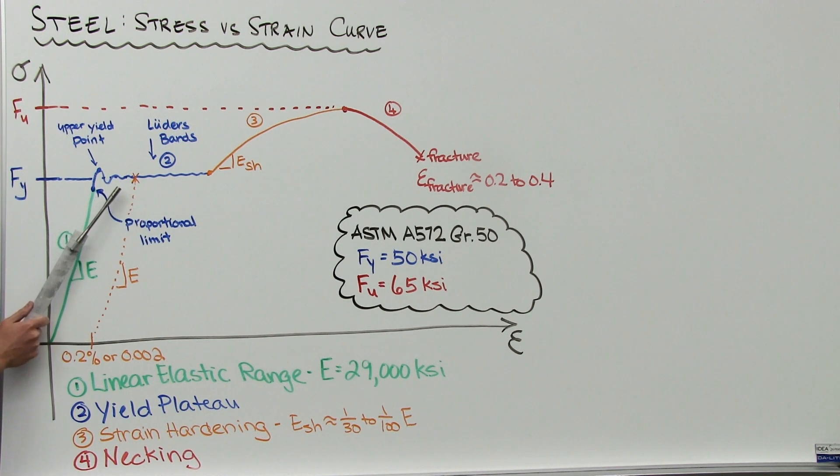As we keep breaking bonds, the force rises and falls a little bit, giving the curve some variation, or what we call Lüders Bands. Oh, I see.